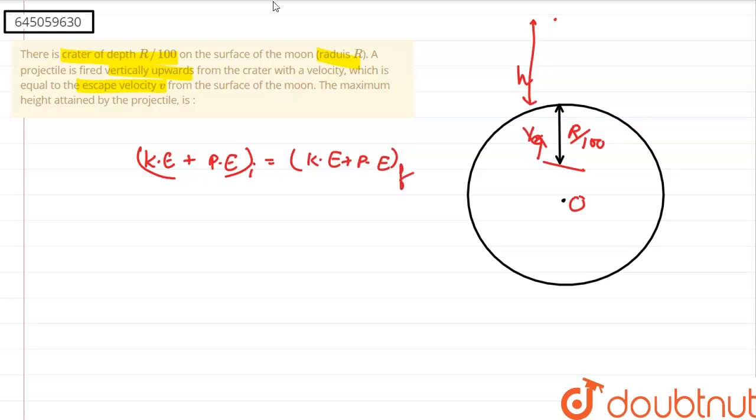Initially we have that it was starting with escape velocity. So escape velocity is equal to root over of 2G capital M by r. We know that. Now let us put all the values: kinetic energy is half m into root over of 2GM by r whole squared plus.